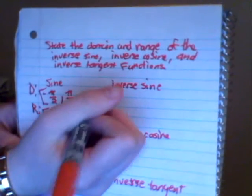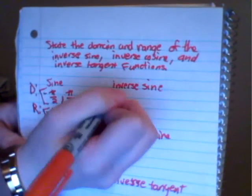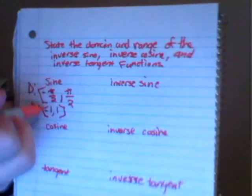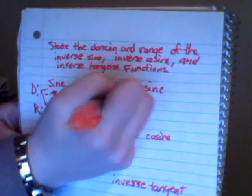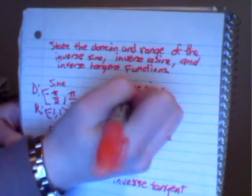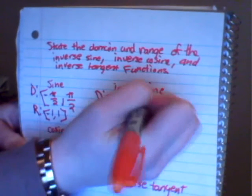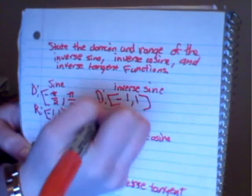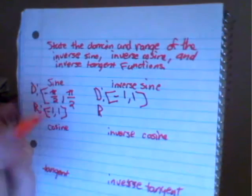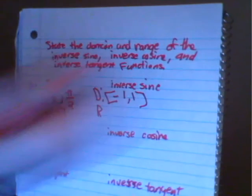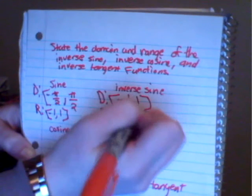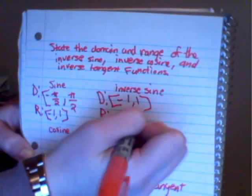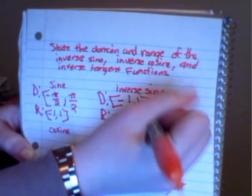For the inverse sine, the new domain is going to be what the range of that sine function was. So the domain of the inverse sine is going to be negative 1 to 1, and the range is going to be what the domain of the sine function was — so that's negative pi over 2 to pi over 2.